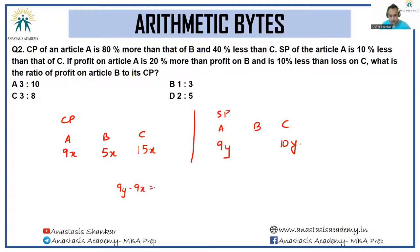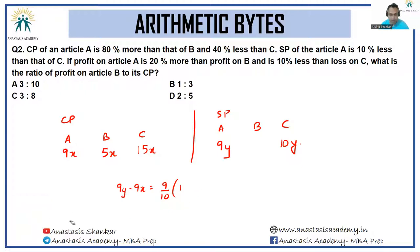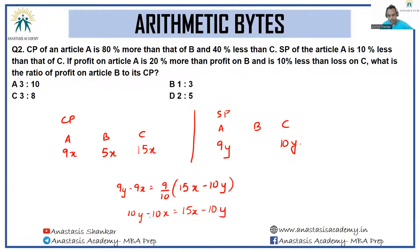Setting up the equation: 9y minus 9x equals (9/10) of the loss on C. Since C has a loss, that becomes 15x minus 10y. Simplifying: 10y minus 10x equals 15x minus 10y, so 20y equals 25x, giving x/y equals 4/5.